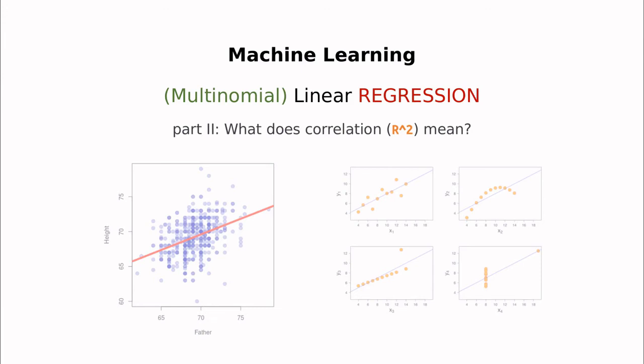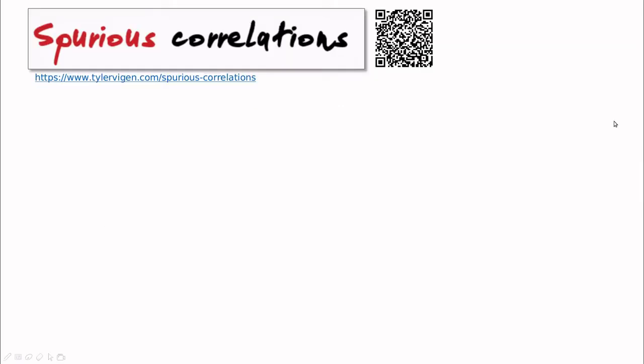Hi everyone. Today we're going to talk about one of the most important concepts in statistics in general, and machine learning in particular: the concept of correlation, also known as R-squared.